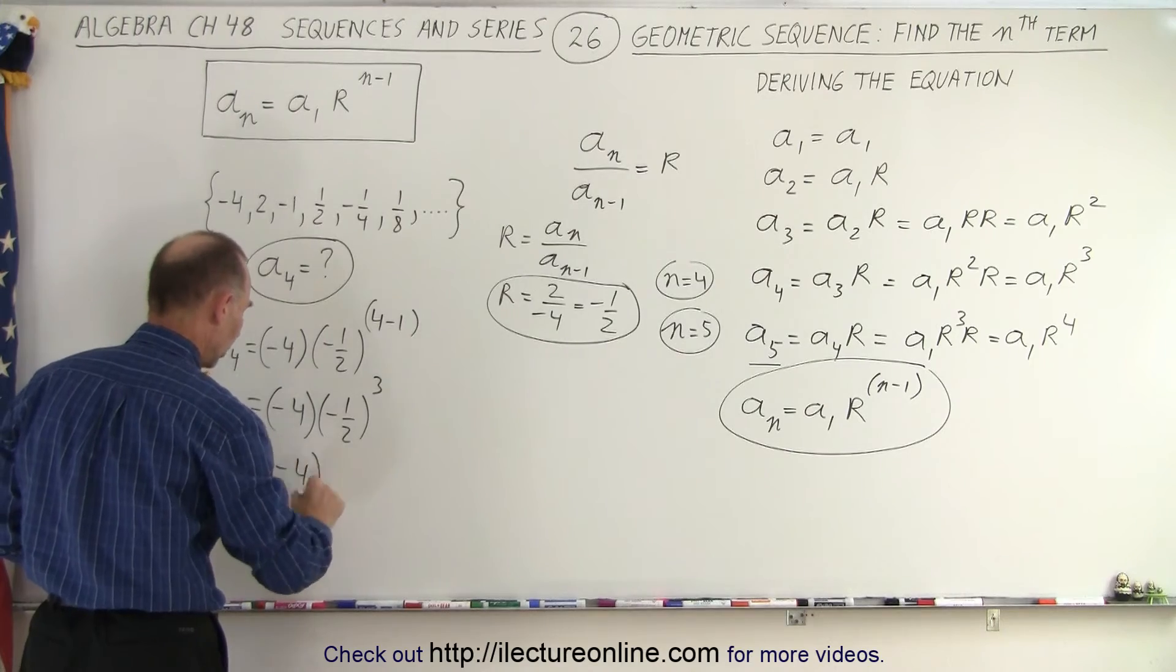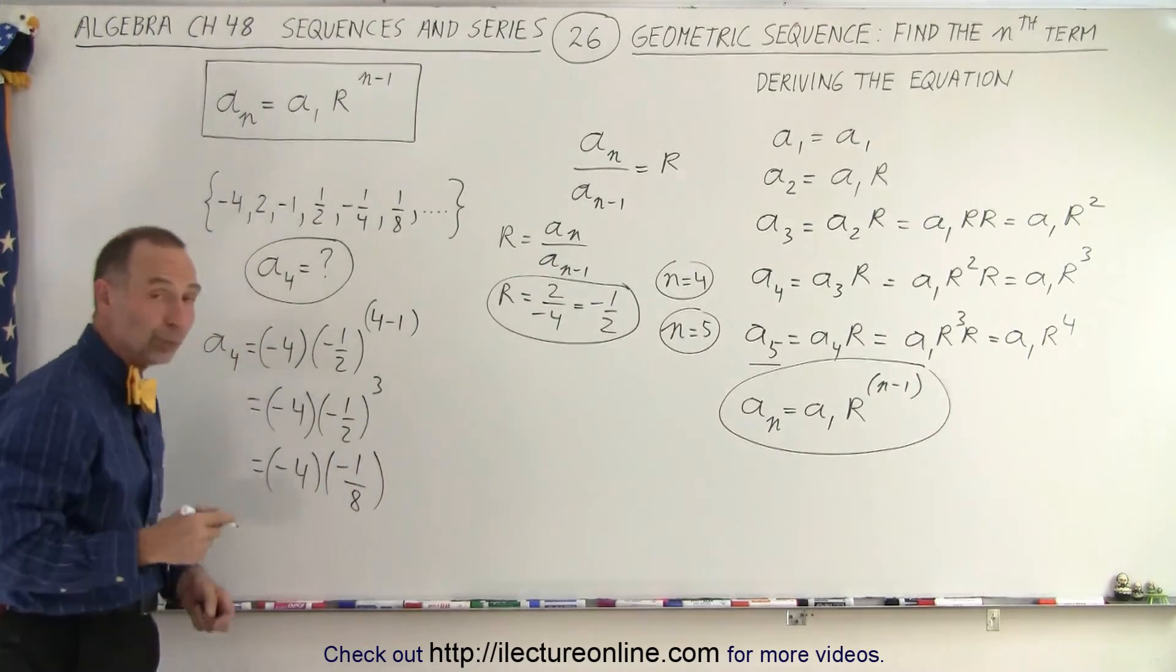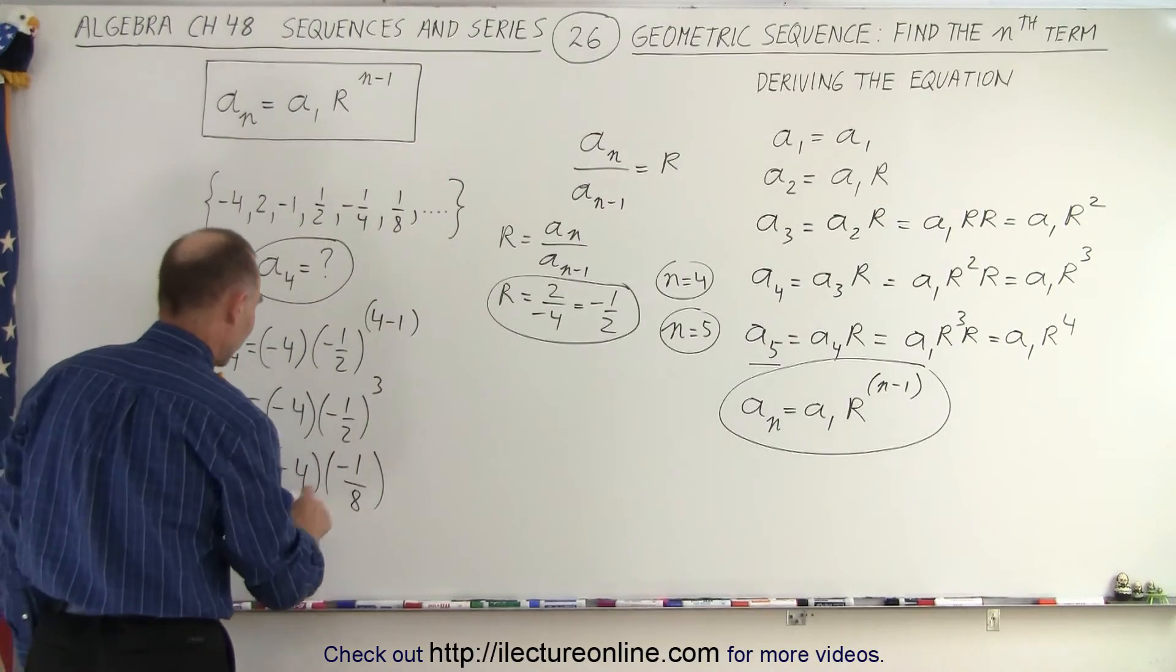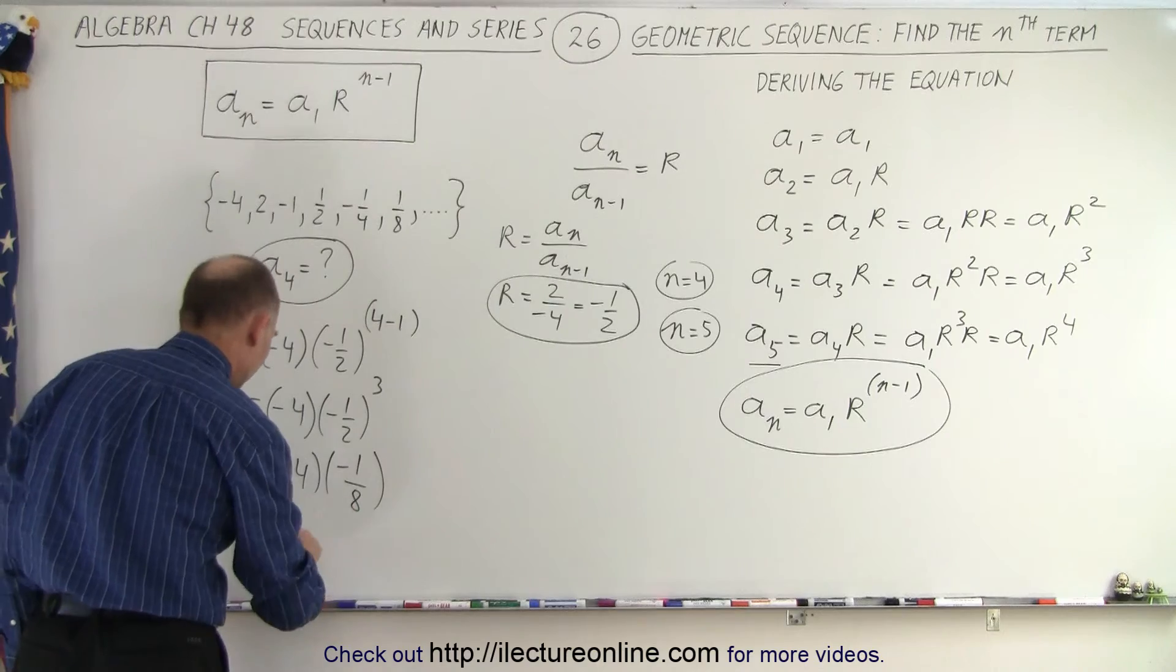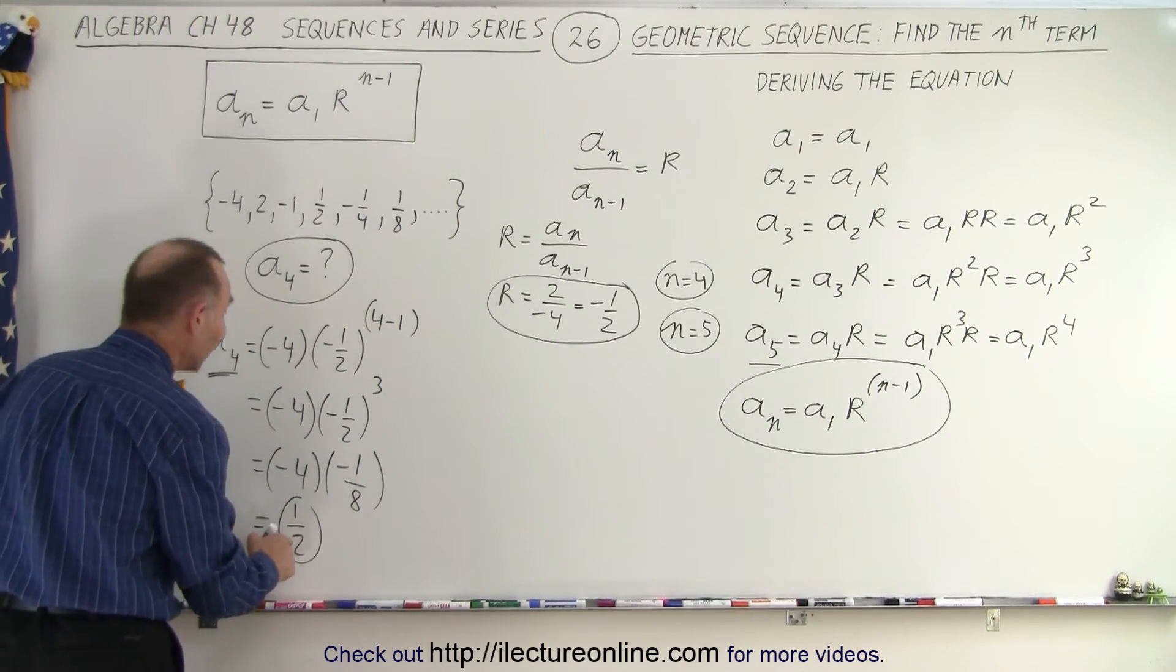So this is equal to minus 4 times minus 1/2 raised to the third power, which is equal to minus 4 times minus 1 over 8. Because negative 1 cubed is still negative 1 and 2 cubed is 8. And so minus times minus is plus, and 4 divided by 8 is 1/2. So you can see that the fourth term is equal to 1/2.